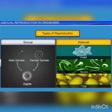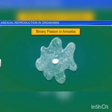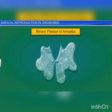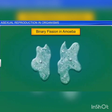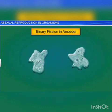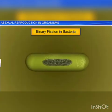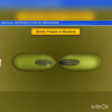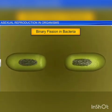Asexual reproduction, commonly seen in protists, monerans, and fungi, is of many different types. The amoeba, for instance, reproduces by binary fission, where the parent cell divides into two halves and each half develops into a daughter cell. Likewise, bacteria too reproduce through binary fission.